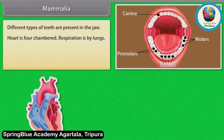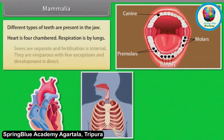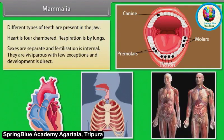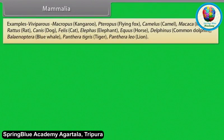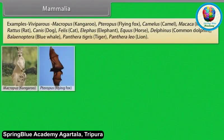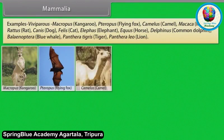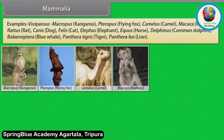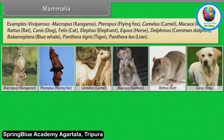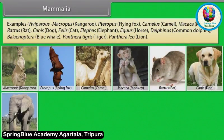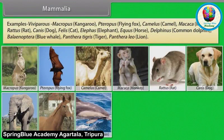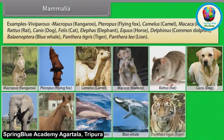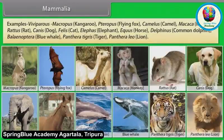Heart is four-chambered. Respiration is by lungs. Sexes are separate and fertilization is internal. They are viviparous with few exceptions and development is direct. Examples — Viviparous: Macropus (Kangaroo), Pteropus (Flying Fox), Camelus (Camel), Macaca (Monkey), Rattus (Rat), Canis (Dog), Felis (Cat), Elephas (Elephant), Equus (Horse), Delphinus (Common Dolphin), Balaenoptera (Blue Whale), Panthera tigris (Tiger), Panthera leo (Lion).